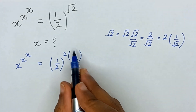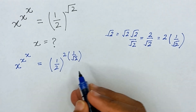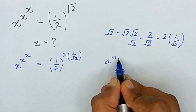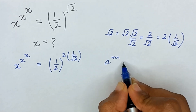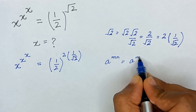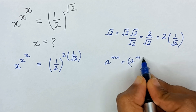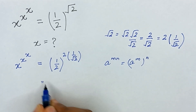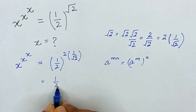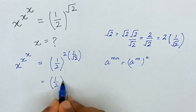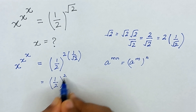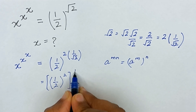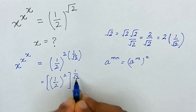Now it is in the form of a raised to the power m·n. Since a raised to the power m·n can be written as a raised to the power m, whole raised to the power n, I can write it as 1 divided by 2 squared, whole raised to the power 1 divided by square root of 2.